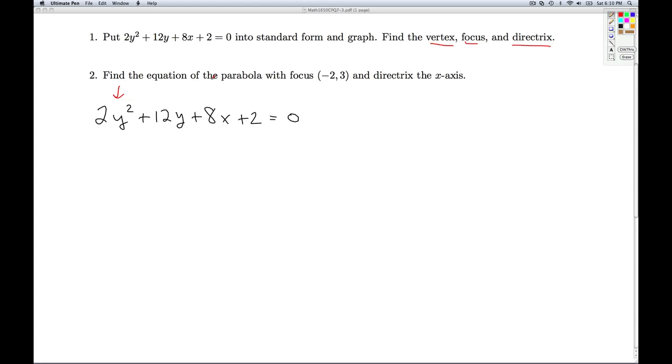So the first thing we need to know is what standard form we're shooting for with this guy. And since it's the y that's squared, we're looking for the standard form (y - k)² = 4p(x - h). The vertex is h, k, and p is going to help us figure out how far to go from the vertex to get the directrix and focus.